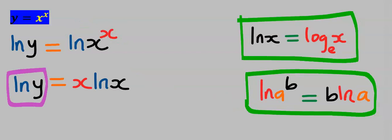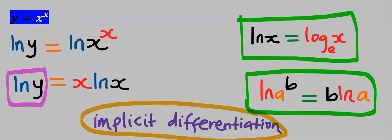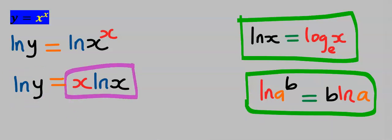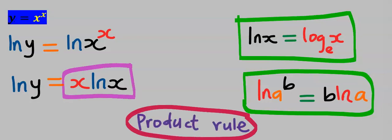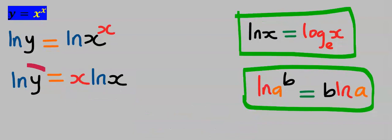Next we are going to differentiate this using implicit differentiation, and we are going to differentiate the right side using the product rule — product because these are multiplying functions.